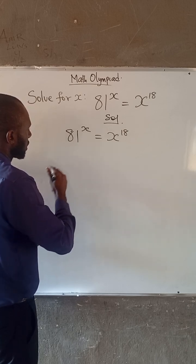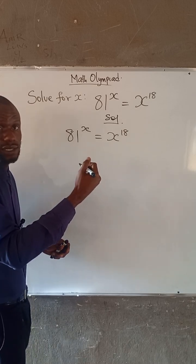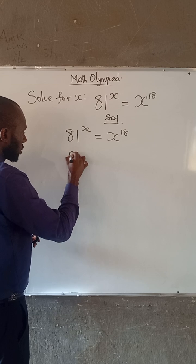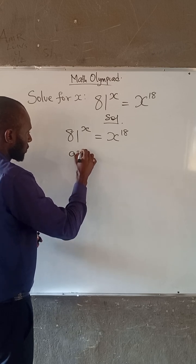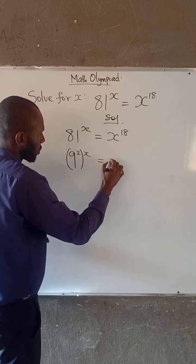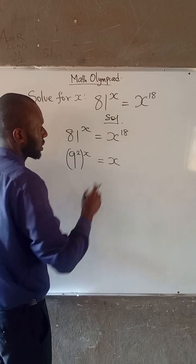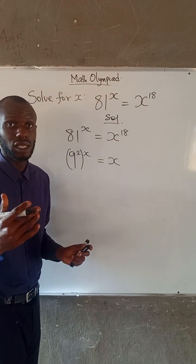Now note that 81 can be written as 9^2. So (9^2)^x equals x^(18). And also 18 can be written as 9 + 9.